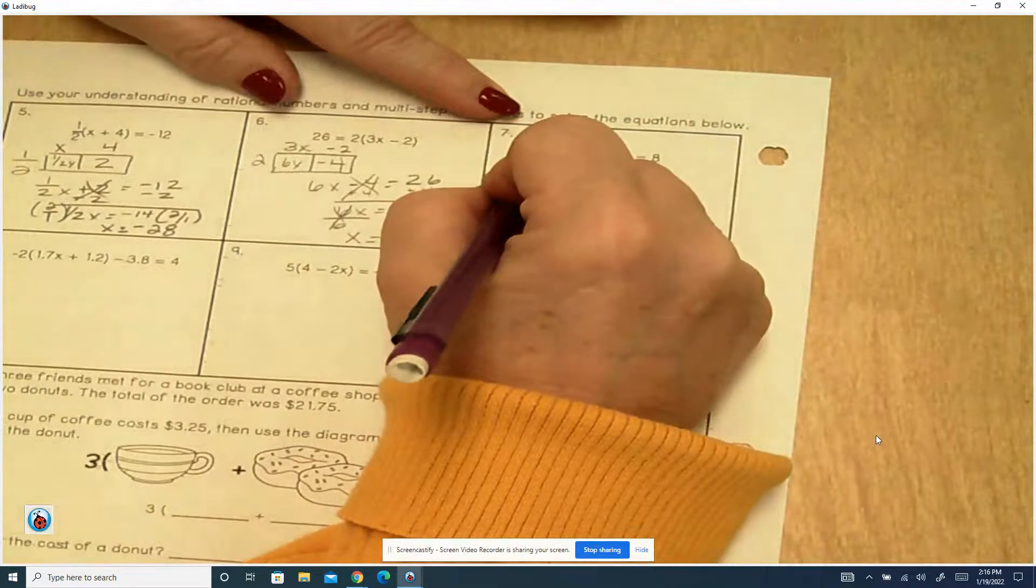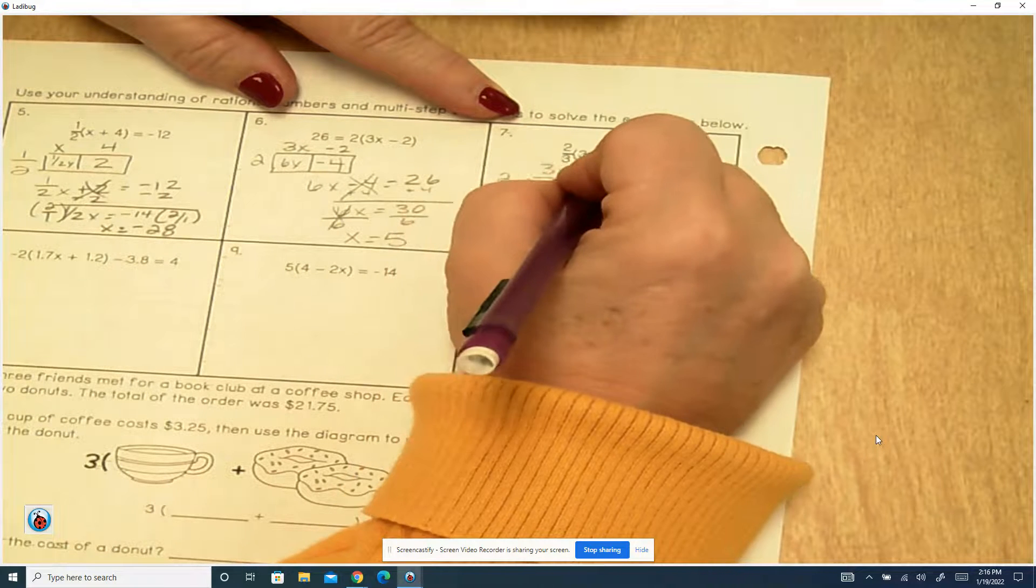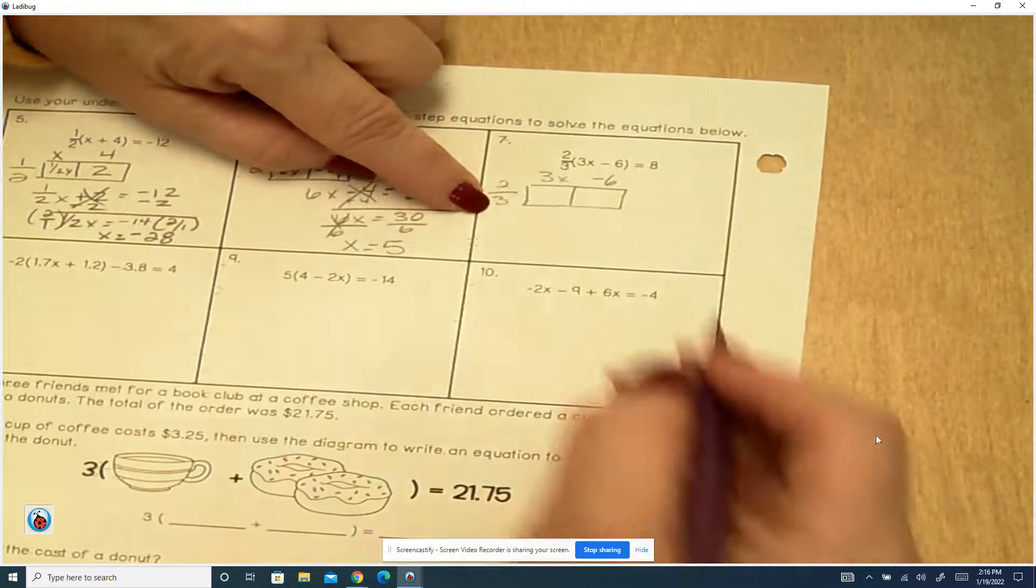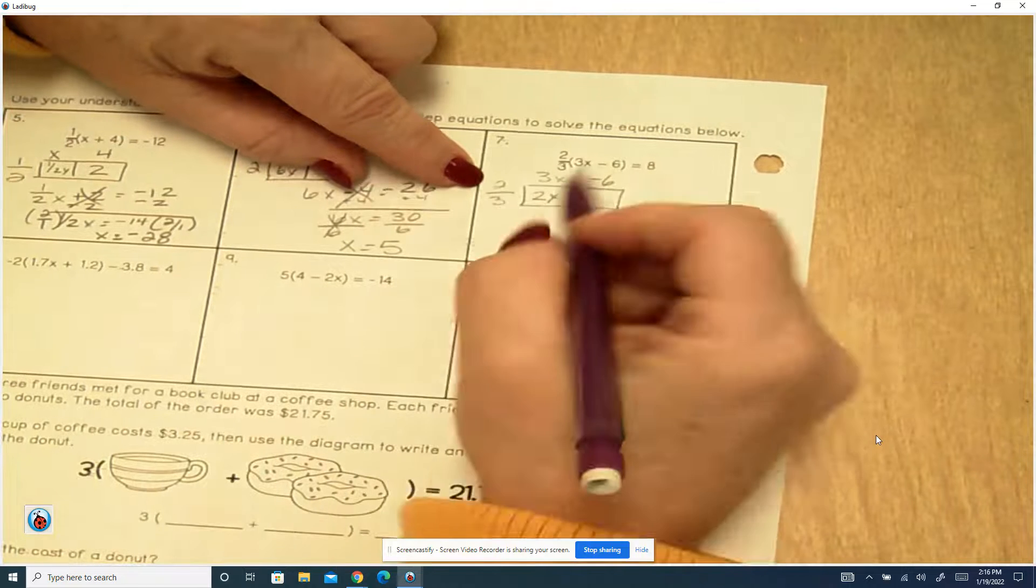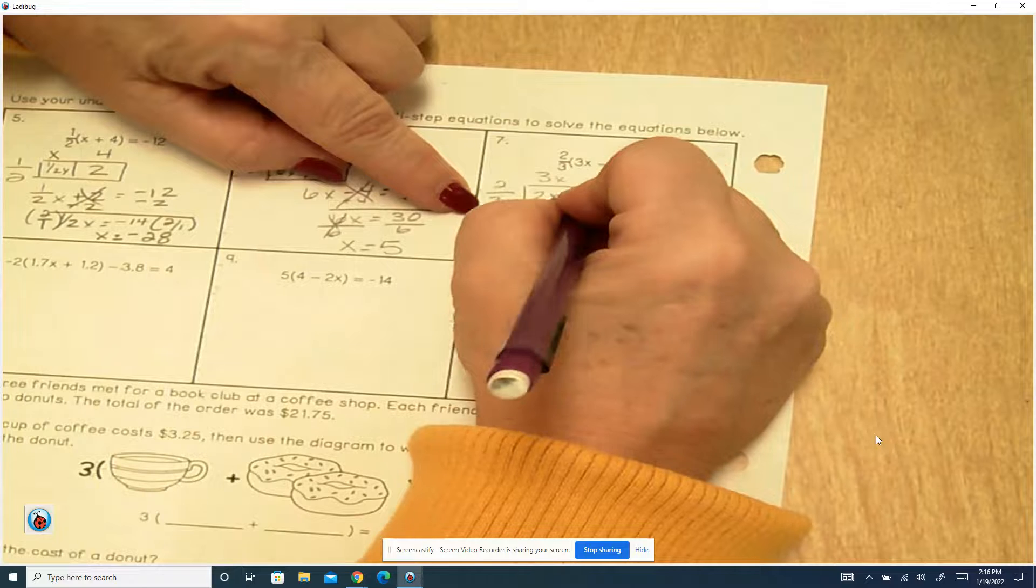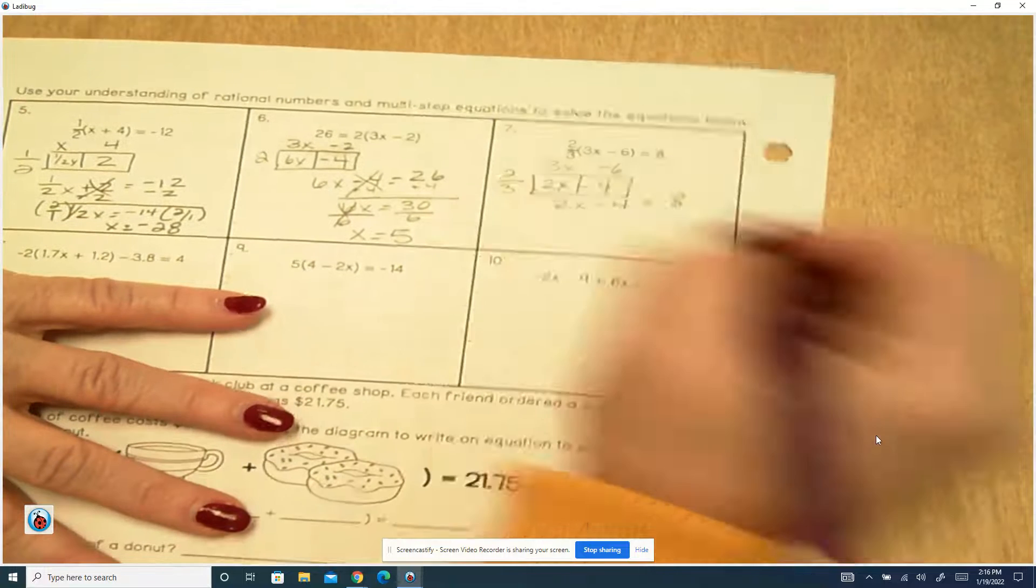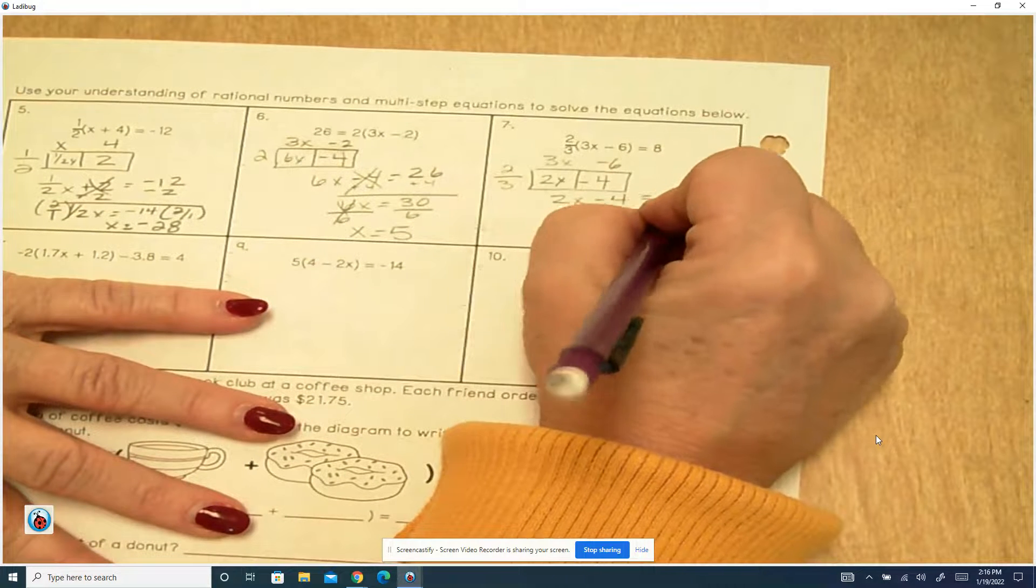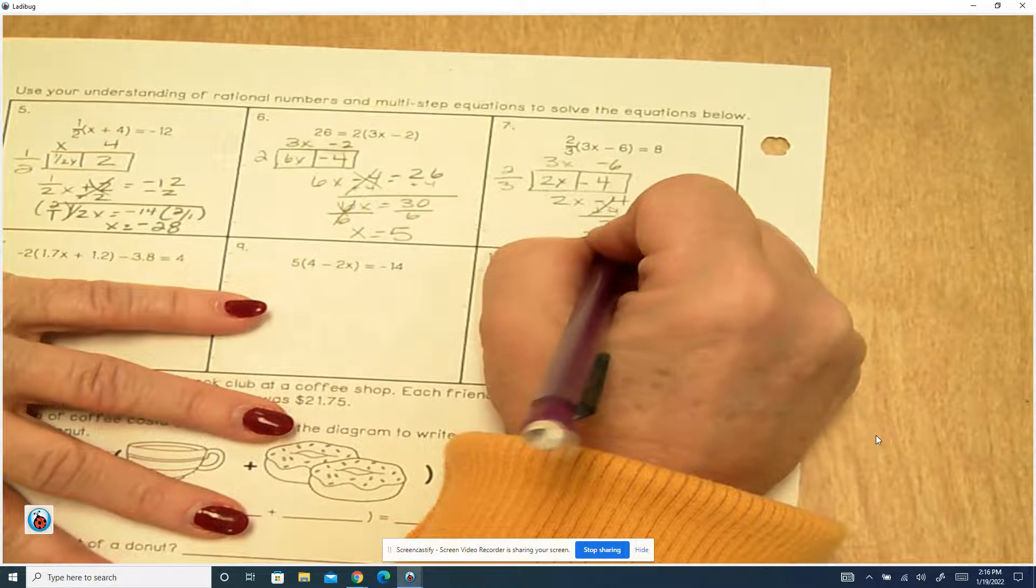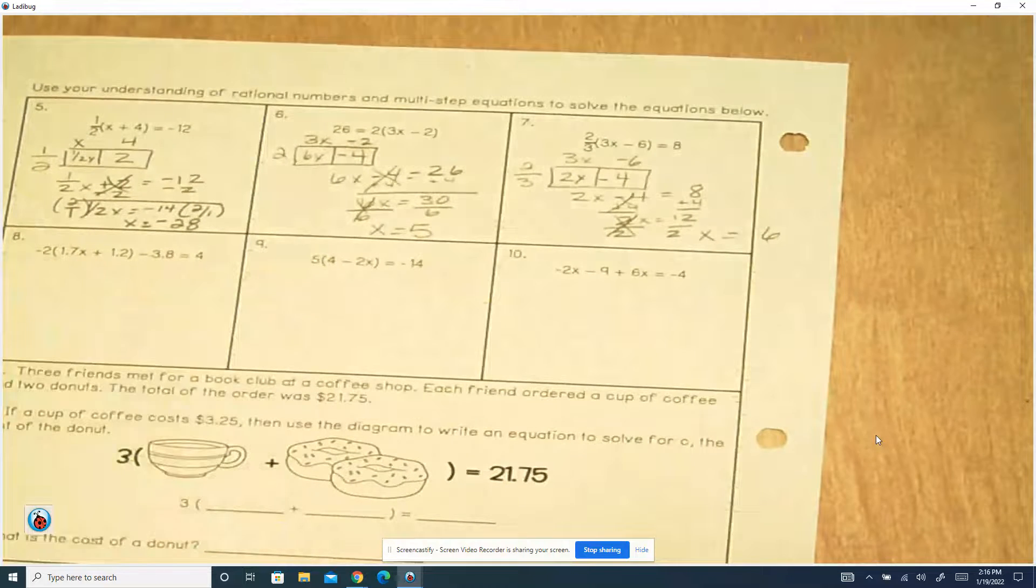2 thirds. And then our box out here. We've got 3x minus 6. So 3 times 2 is 6. 6 divided by 3 is 2. So that's 2x. Because this one's going to be negative. 6 times 2 is 12. Divided by 3 is 4. So 2x minus 4 equals 8. Add 4 to both sides. 2x equals 12. Divide by 2. 12 divided by 2 is 6. x equals 6.